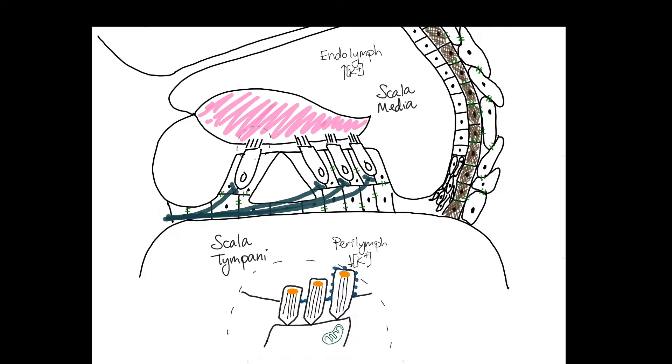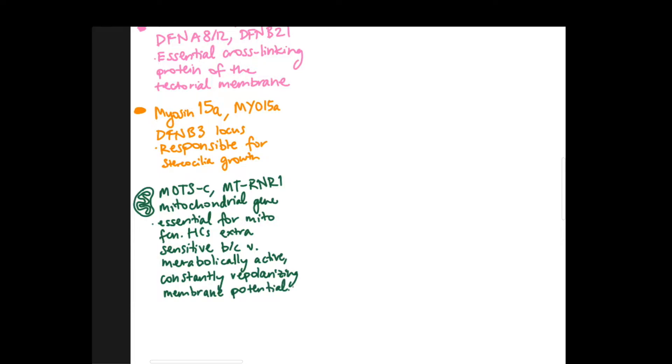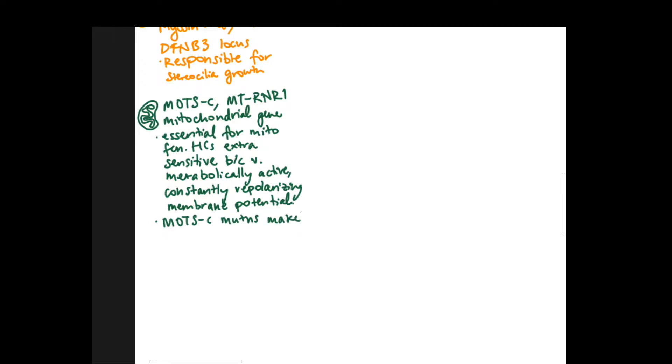The last of the non-syndromic genetic causes of hearing loss is a mitochondrial gene. MTRNR1 codes for the protein MOTS-C and the mitochondria are organized in the inner hair cells and are super important there. So any mitochondrial genes that are essential for mitochondrial function can really impact the hair cells. Hair cells are extra sensitive because they're very metabolically active constantly repolarizing their membrane potential between firing. MOTS-C mutations also importantly make mitochondrial protein synthesis extra sensitive to inhibition by aminoglycosides. So people with this mutation are more prone to ototoxicity from aminoglycosides.